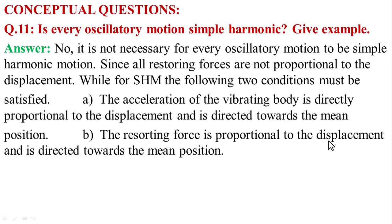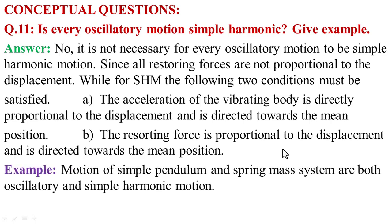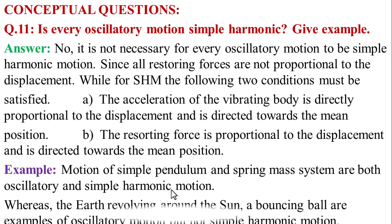Otherwise, the body is not in simple harmonic motion. For example, the motion of a simple pendulum and a mass-spring system are both oscillatory and simple harmonic motion. In another example, the Earth revolving around the Sun and a bouncing ball are examples of oscillatory motion but not simple harmonic motion.